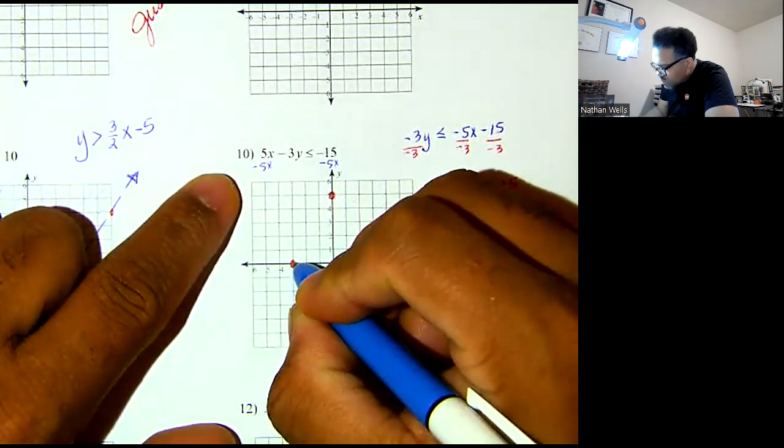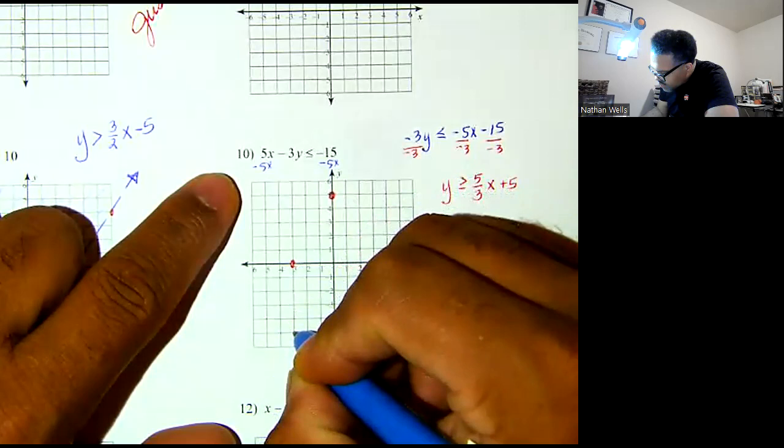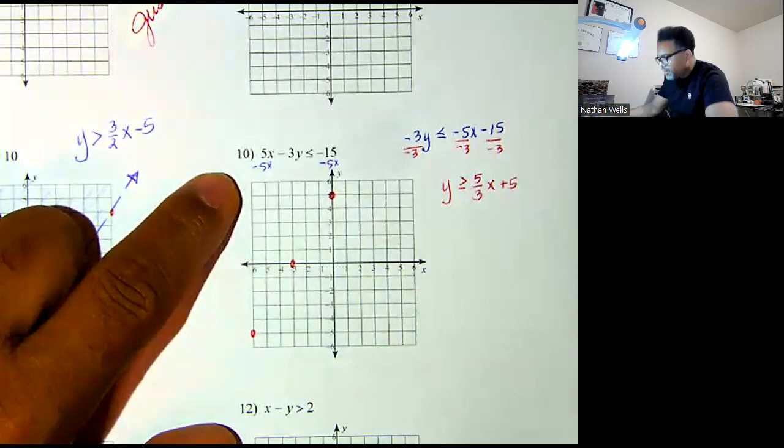Do it one more time. You only need 2 points to connect to make a line, but I like more if I can. So fall 5: 1, 2, 3, 4, 5, to the left 3. Plot a point.